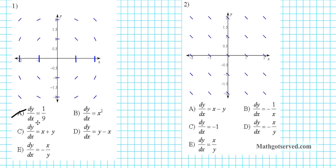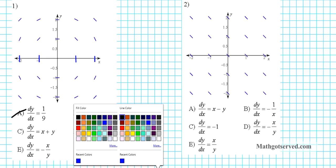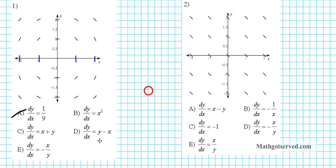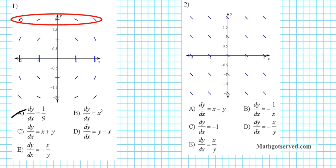Now we're down to four options. We're going to fix one variable and ask how the other impacts the steepness of the slope field. Let's fix y first — fix y at y equals 2. With y fixed and x varying, does the steepness of the tangent lines change? The answer is absolutely yes. Since the steepness is changing, that means x is going to be present in the differential equation.